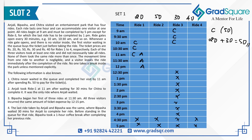Bibasha began her first of 3 rides at 11:30 am. Since all 3 visitors must incur the same expense by 12:15 pm and Chitra already spent Rs.50, Anjali — who completed Ride 1 by 12 pm at a cost of Rs.20 — must spend an additional Rs.30 before 12:15 pm. That means Anjali took Ride 3 at 12 pm, completing it at 1 pm, for Rs.30, bringing her total to Rs.50 by 12:15 pm.